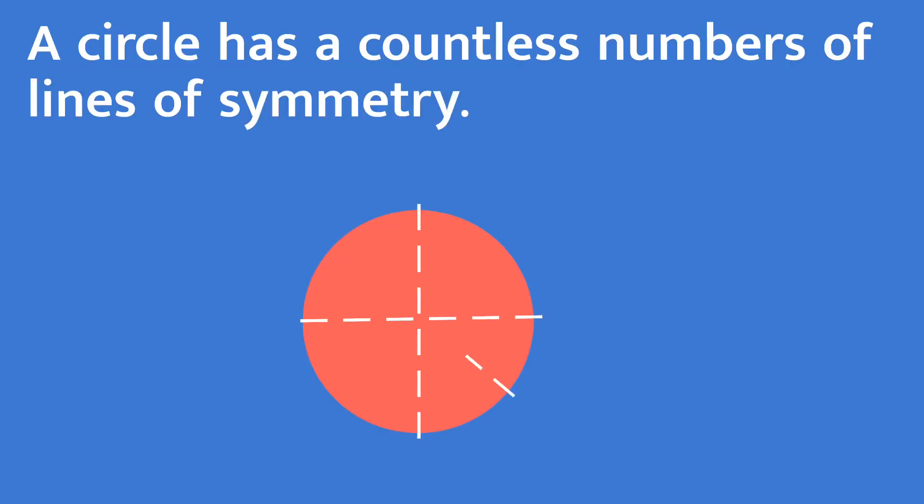A circle has countless numbers of lines of symmetry. That means wherever you fold on these lines, it will be exactly half to its other side.